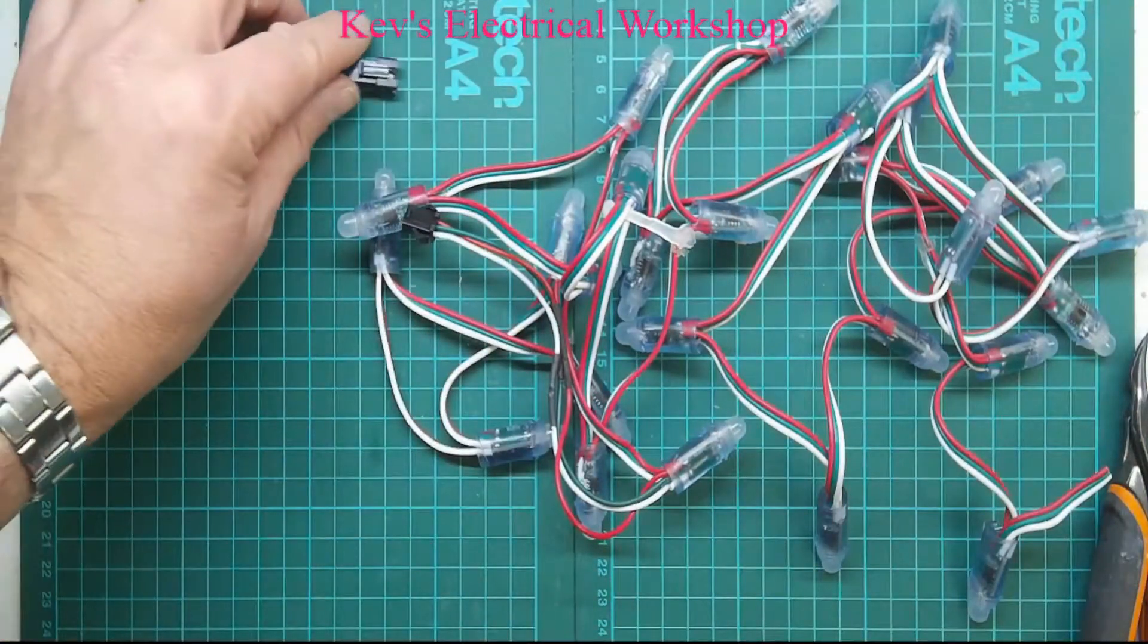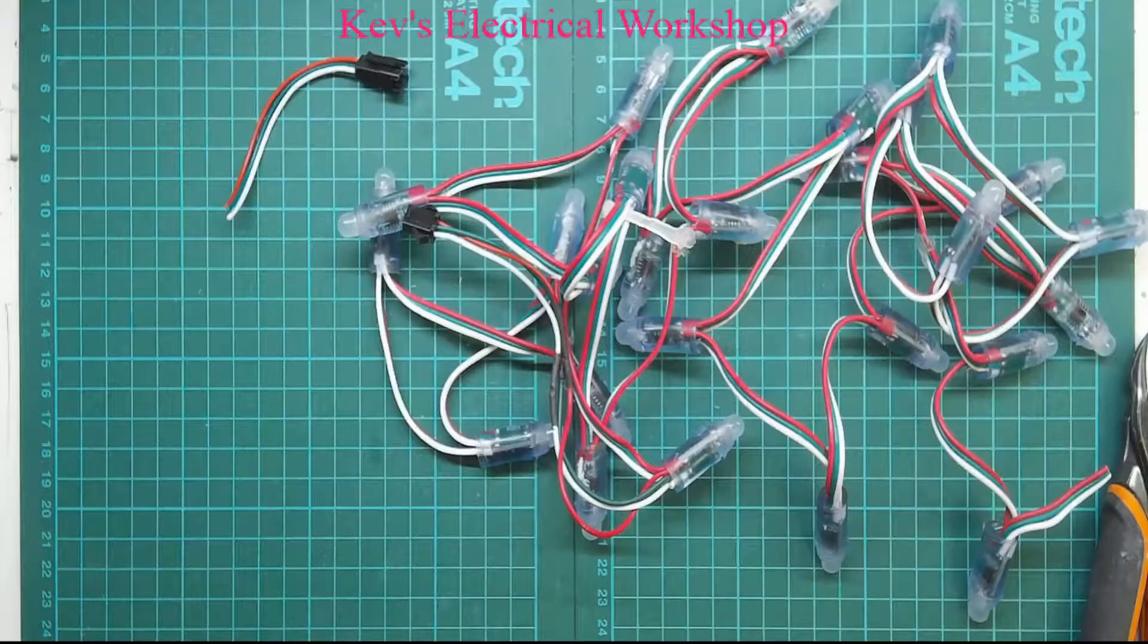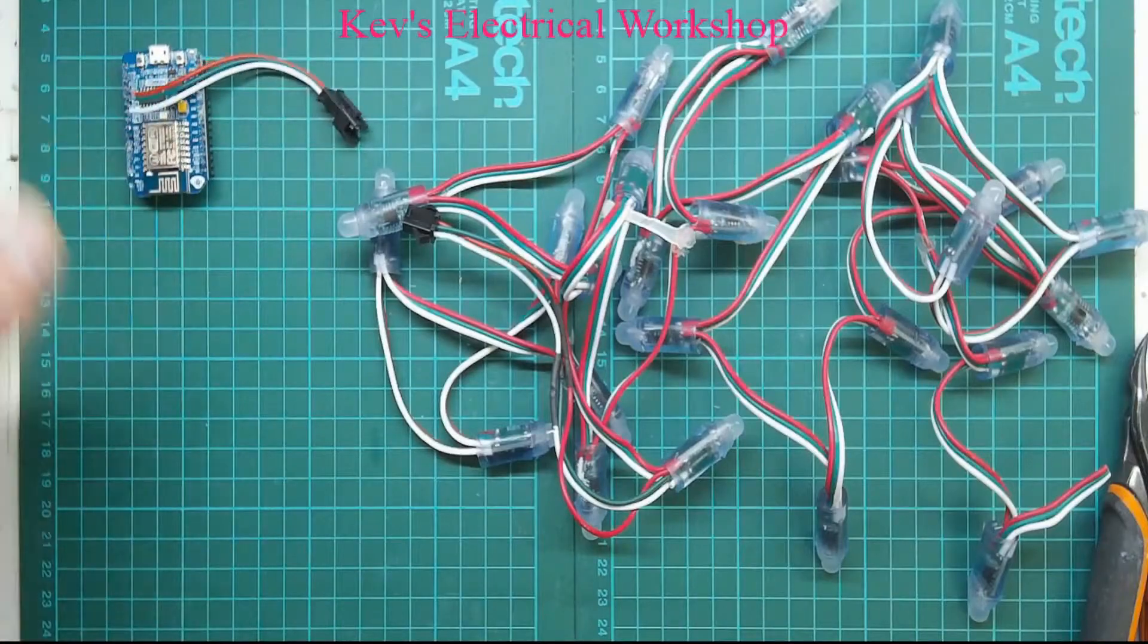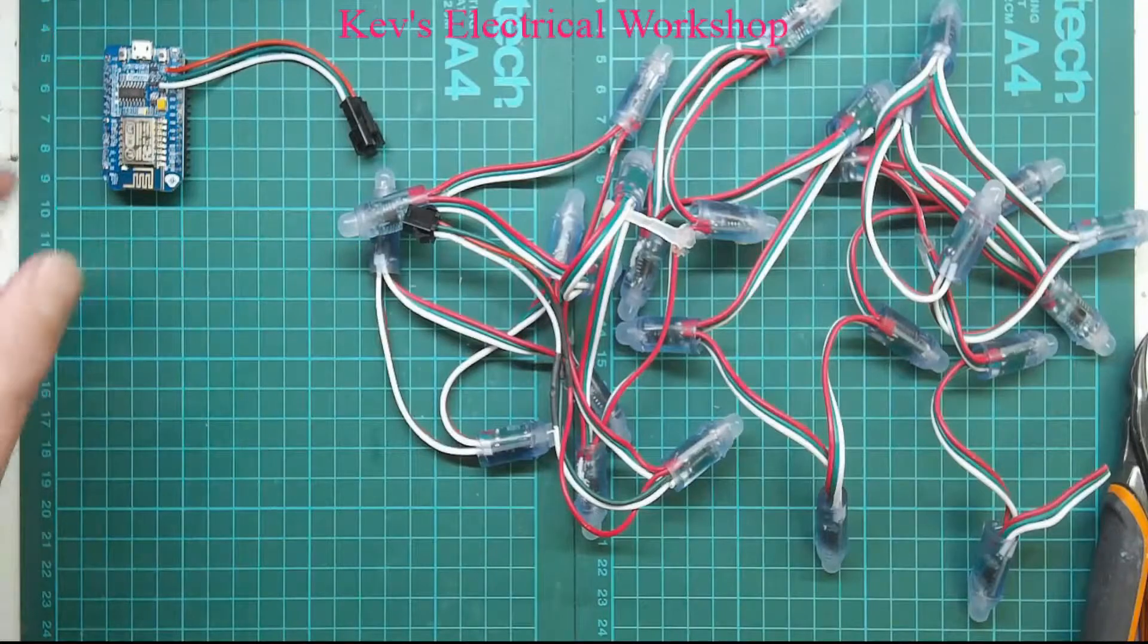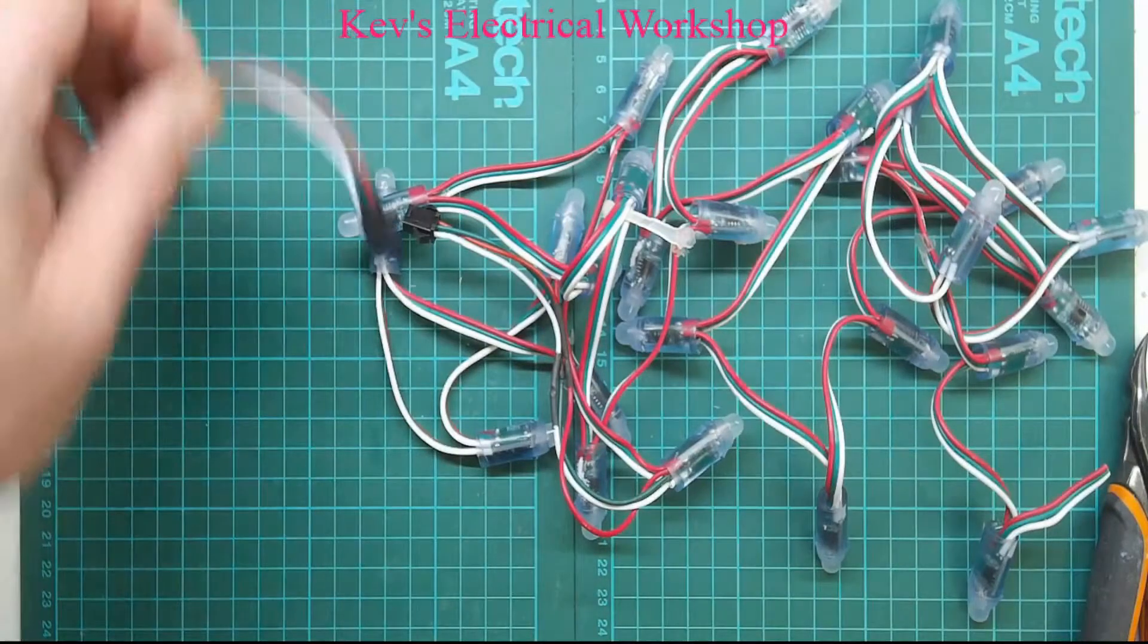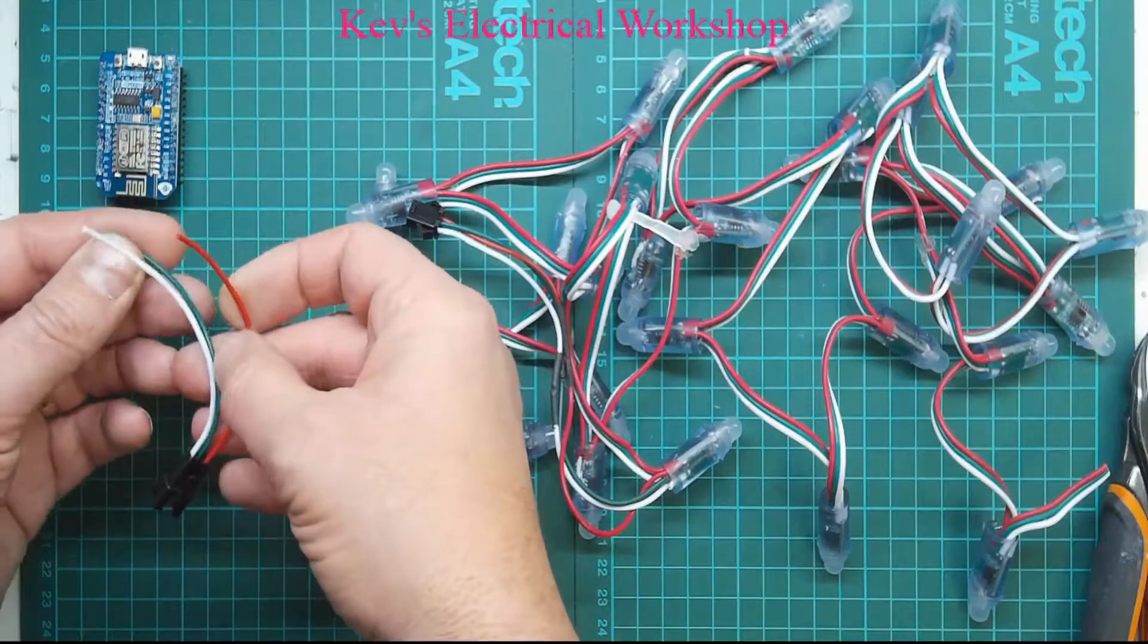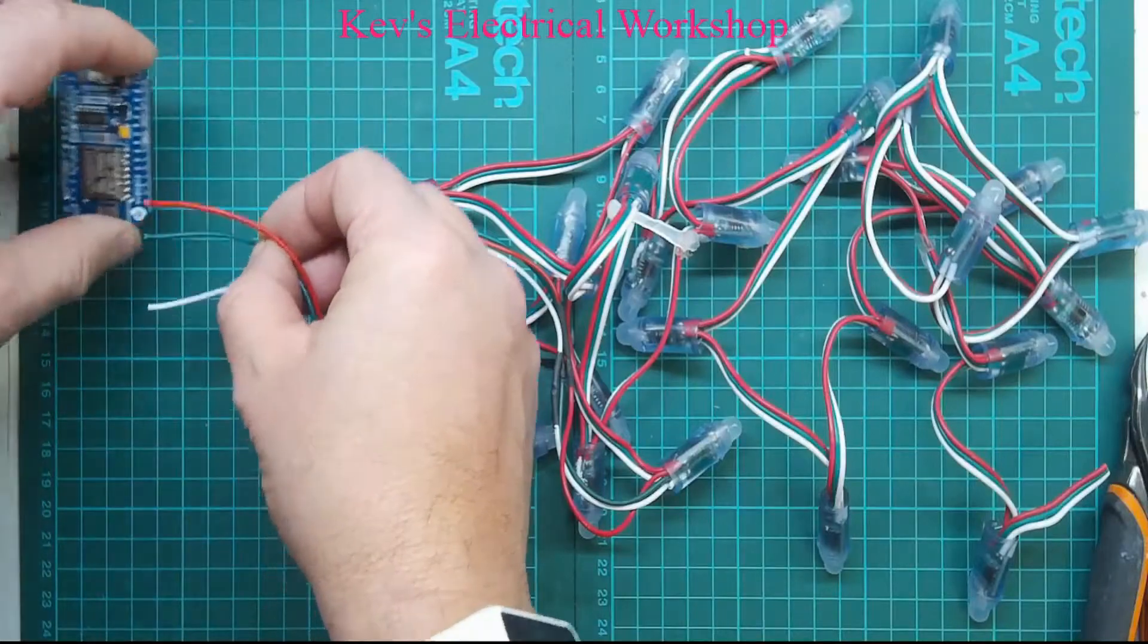This socket will be hardwired onto our ESP8266 NodeMCU unit. The red will be going to the 5 volts, the white will be going to ground, and the green will be going to the pin that we program up in our code to run these.